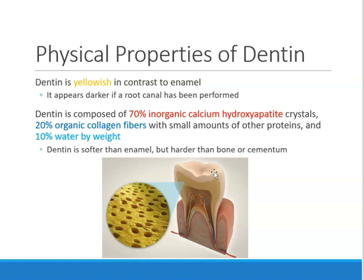Remember when we talked about enamel, we said the enamel has 96% inorganic calcium hydroxyapatite crystals. Well, the dentin is not 96% — it's 70% inorganic, 20% organic, and 10% water. Just be familiar with these numbers because that's the composition of dentin.